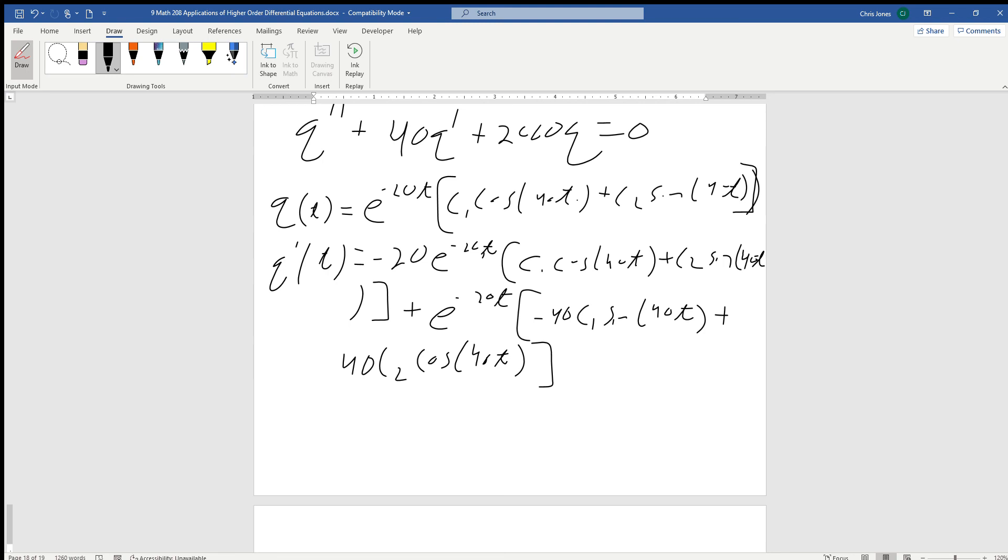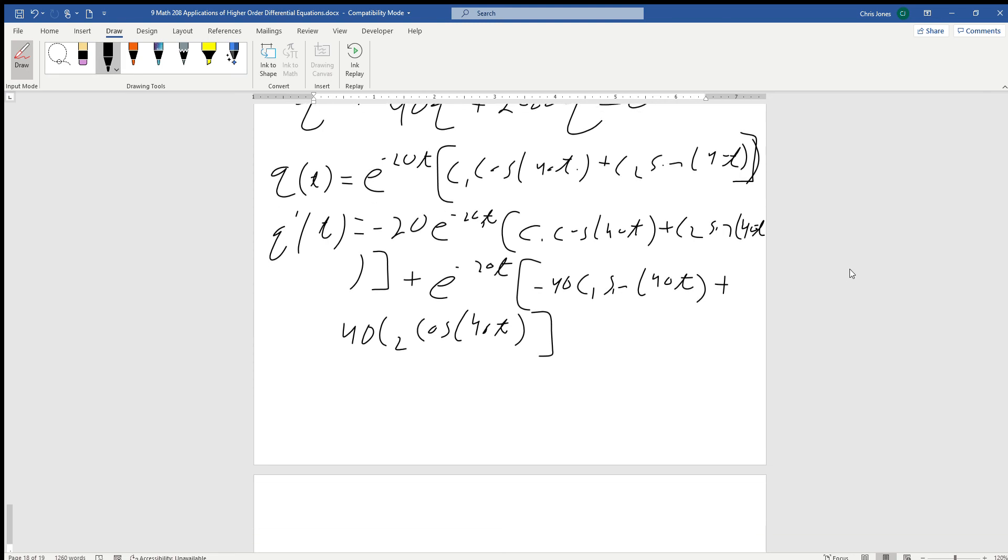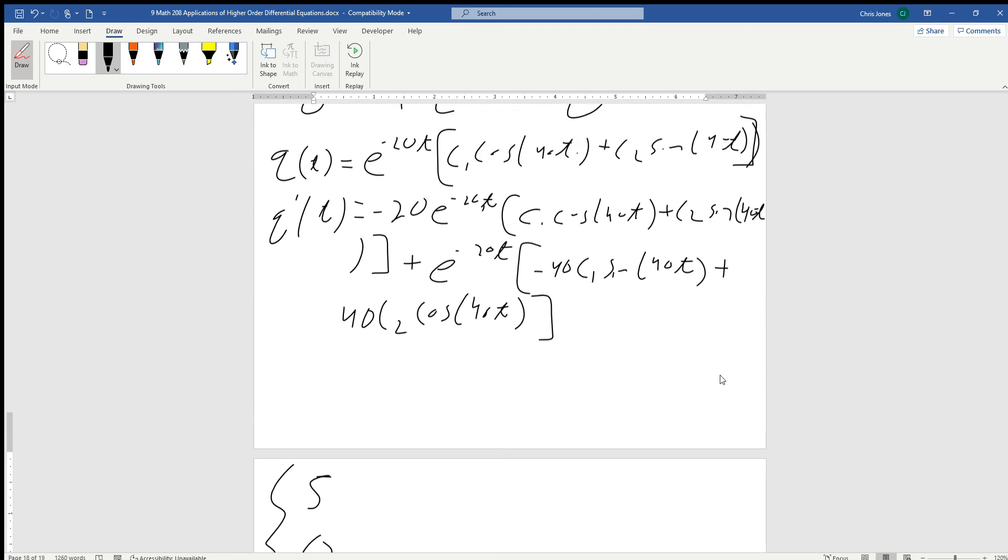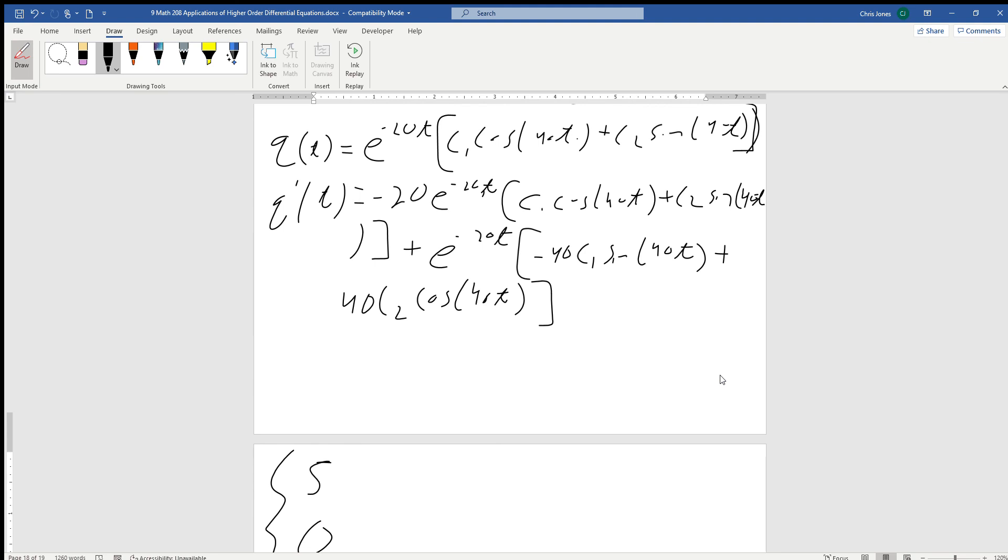So 40 C2 cos of 40T. Now this looks pretty horrific, but the good news is we're plugging in zero and a lot of this stuff is going to simplify. Our two values we had were 5 and zero for the original function, and then zero for the derivative. When we substitute zero back in, all the e's are going to cancel out. All the sines are going to cancel out. That's good.